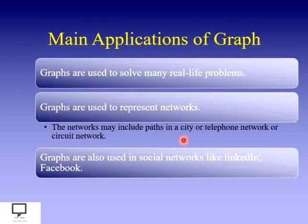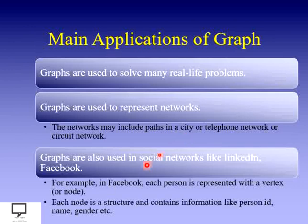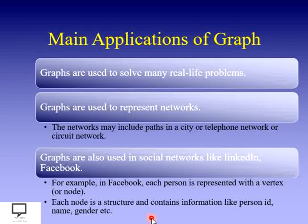In both these applications, nodes and edges are used — that data structure is a graph. In Facebook, each person represents a vertex with information like person ID, person's name, and person's gender. Every Facebook user has a number of friends in their friend list. The connection between you and your friend is the edge of the graph. In this way, these are the main applications showing how graph data structure is useful and why we study it.